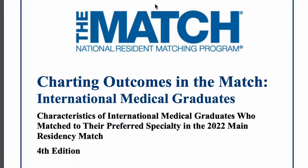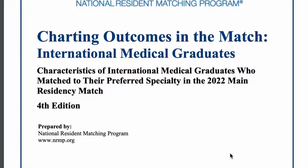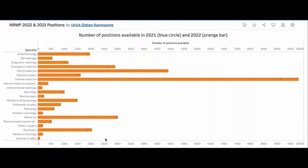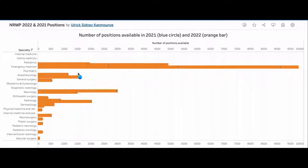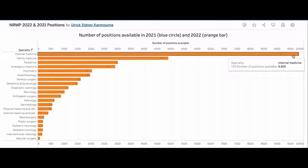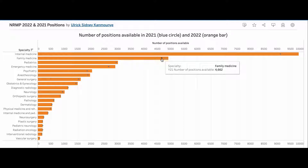I made a few graphs from the NRMP data using Tableau Public so we can all see the bigger picture. Feel free to pause the video at any time, or if you want to play around with these figures, I'll be adding corresponding links in the description below. First, let's check out the number of positions available. Internal medicine is a clear winner with 9,809 spots in 2022 — that's up more than 600 spots from 2021. Family medicine is next with 4,916 spots and pediatrics with 3,016.